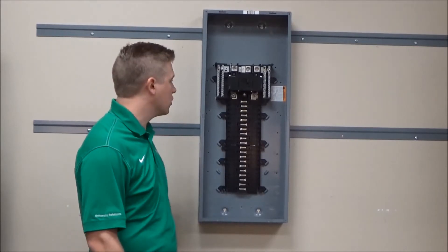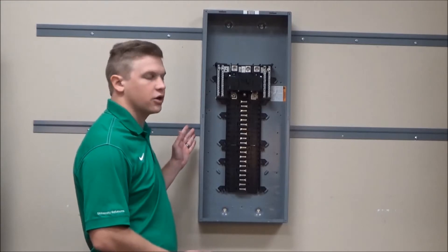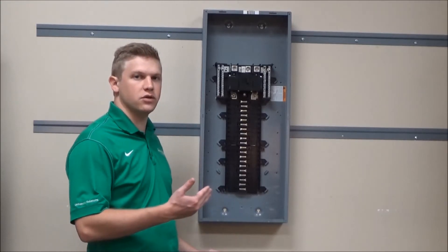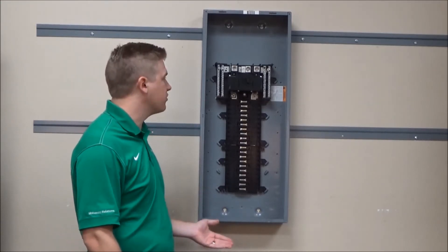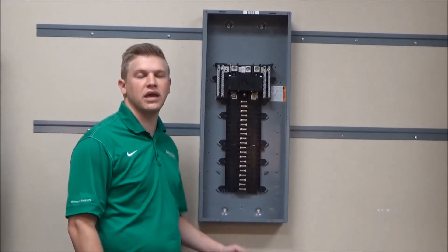The first step in doing so will be to take the load center and rotate it 180 degrees so that the main breaker, instead of being at the top, would now be at the bottom.